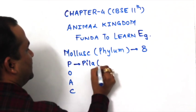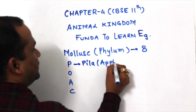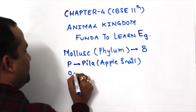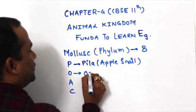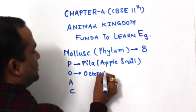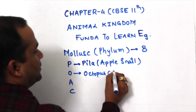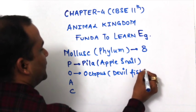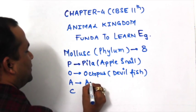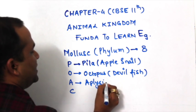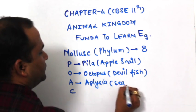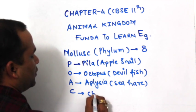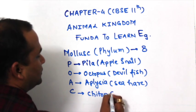P stands for Pila, that is Apple Snail. O for Octopus, also called Devil Fish. A for Aplysia. C for Chiton, also known as Keto.